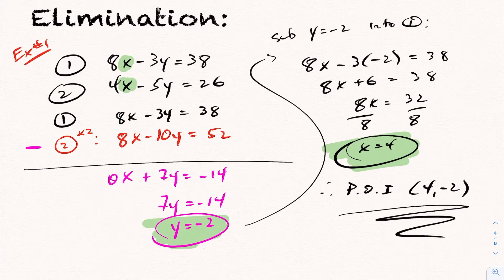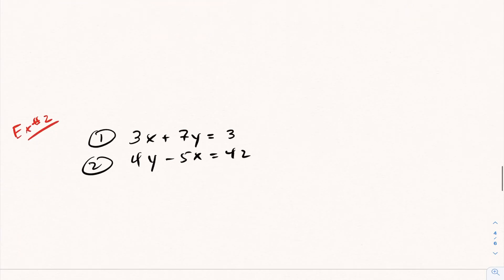I could have just as easily chose to get rid of the y's, in which case I'd have to multiply the first equation by 5 and second equation by 3. But we'll get to more of those examples later on. Let's take a look at this one here.